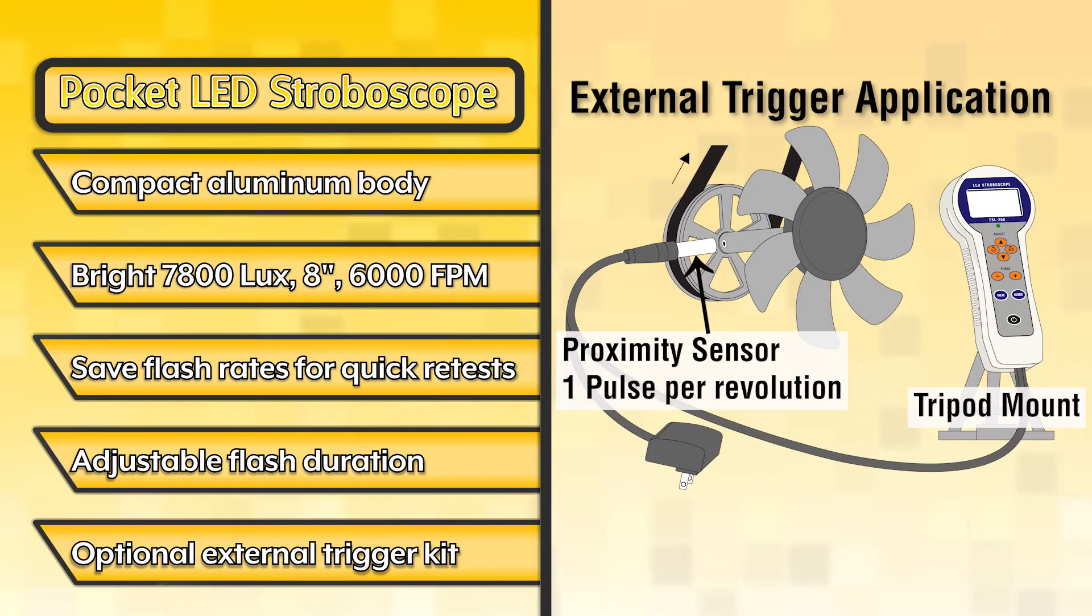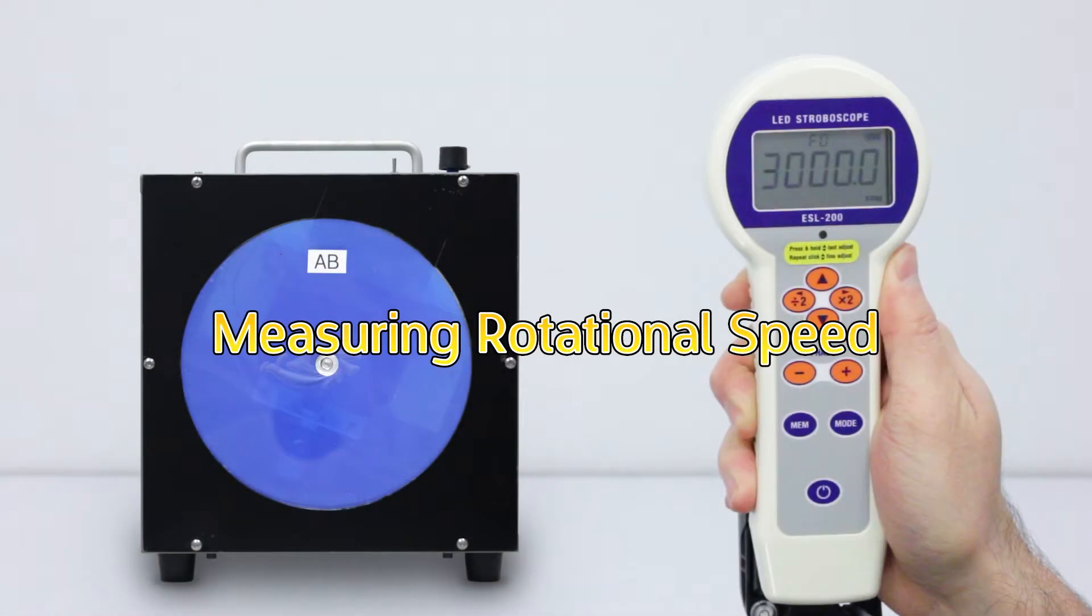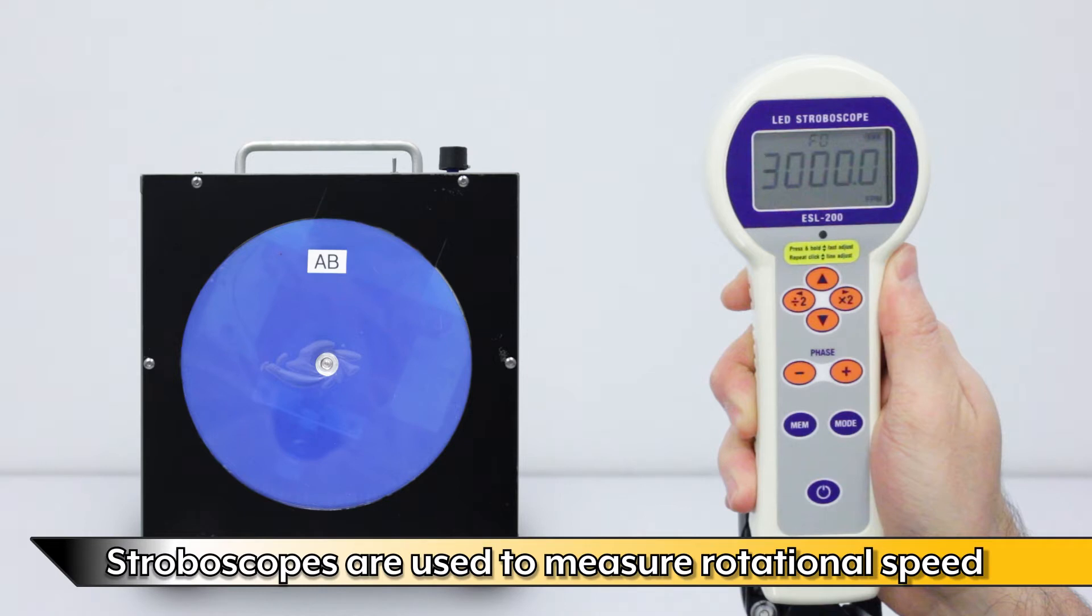Use the optional ET1 external trigger kit to automatically synchronize the strobe with a rotating object measuring rotational speed. Stroboscopes are designed to measure rotating, reciprocating, and linear motion, and for visual inspection of rotating objects without stopping the machine.